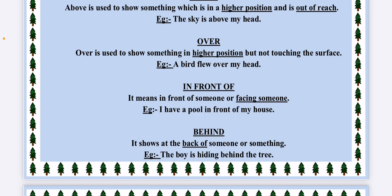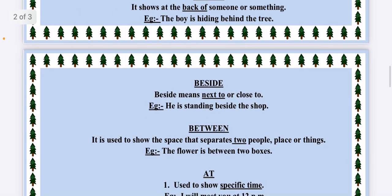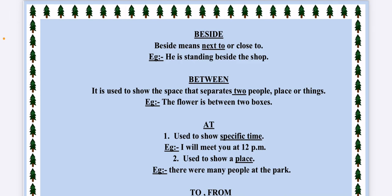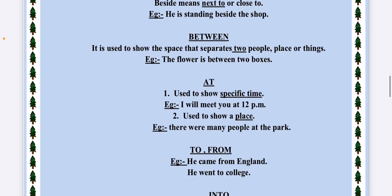The next preposition is BESIDE. Beside means next to or close to. One more preposition means the same which is NEAR. Near also means something which is close to you. He's standing beside the shop or near the shop. BETWEEN is used for two people, two places or two things. The flower is kept between two boxes. Distributed sweets between Naisha and Parth. The opposite is AMONG. Among is used for many people.